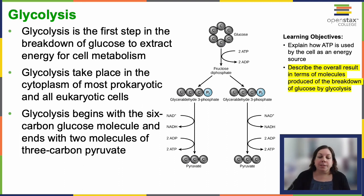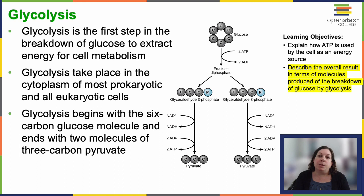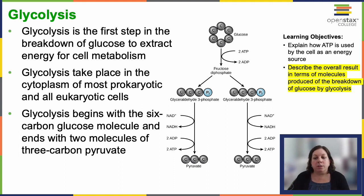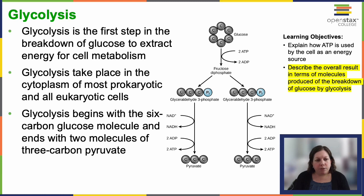In cases where further catabolism — further breaking down of pyruvate — is possible, only two ATP molecules are produced from one glucose molecule. For instance, mature mammalian red blood cells rely heavily on glycolysis for ATP production. It's their primary energy source, so disruption of glycolysis in a red blood cell leads to its eventual death.